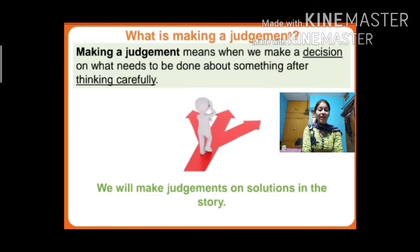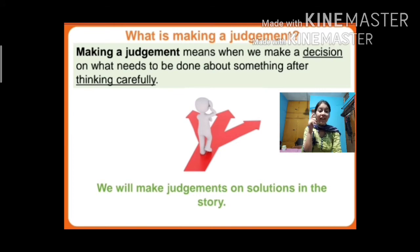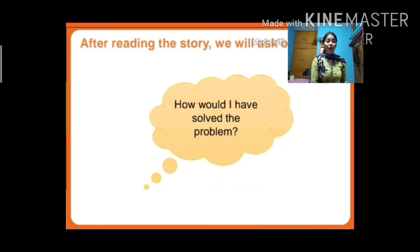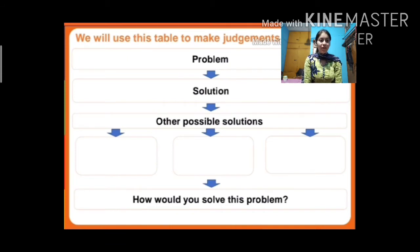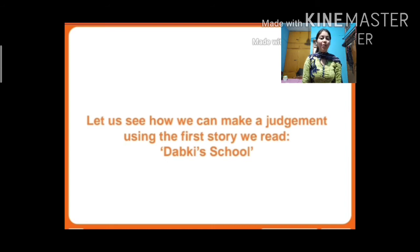In Reading and Listening Expression we learn about making a judgment. Making a judgment means when we make a decision on what needs to be done about something after thinking carefully. We will make a judgment on the solution in Dupki's story. We will use a table with columns: Problem, Solution, and Other Possible Solutions.